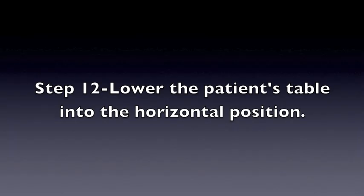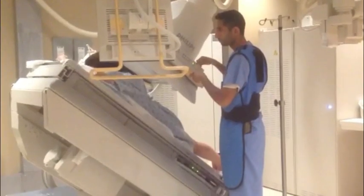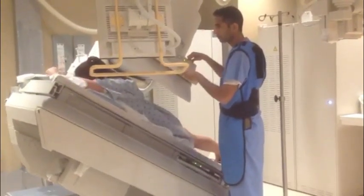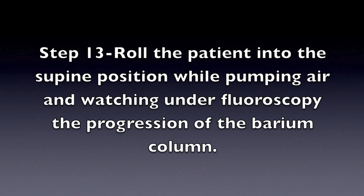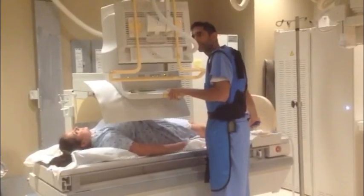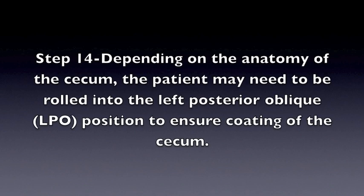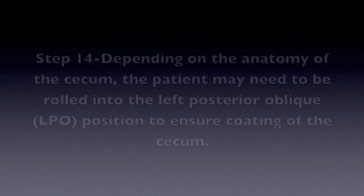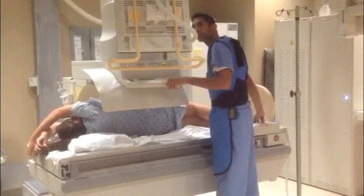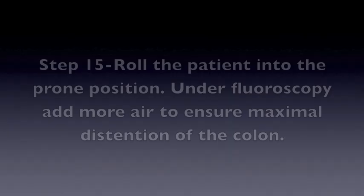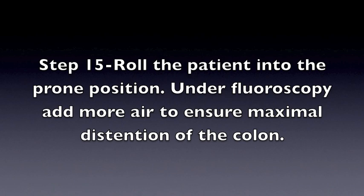Step 12: Lower the patient's table into the horizontal position. Step 13: Roll the patient into the supine position while pumping air and watching under fluoroscopy the progression of the barium column. Step 14: Depending on the anatomy of the cecum, the patient may need to be rolled into the left posterior oblique (LPO) position to ensure coating of the cecum. Step 15: Roll the patient into the prone position. Under fluoroscopy, add more air to ensure maximum distension of the colon.